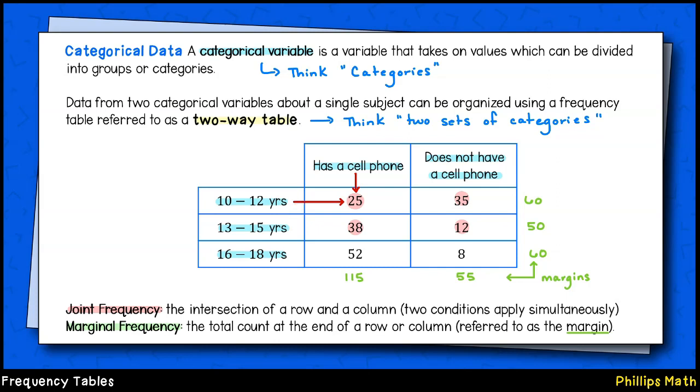The values in the middle of the table highlighted red are referred to as joint frequencies. They represent the number of people who simultaneously fit into the category above and to the left. So this 25 means that there are 25 10 to 12 year olds who have a cell phone.